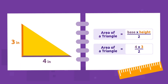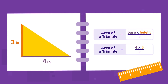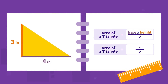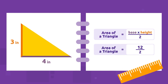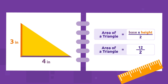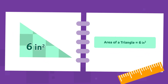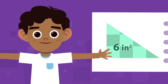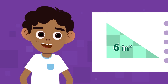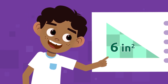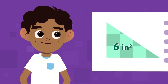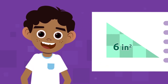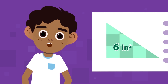To calculate the area of a triangle, we multiply the base by its height and then divide by two. That is four times three equals twelve, and twelve divided by two equals six. The area of this triangle is equal to six square inches — this triangle contains six one-square-inch squares.